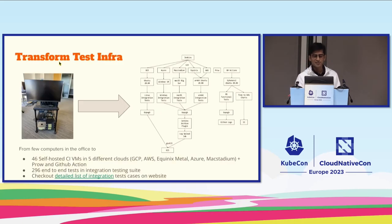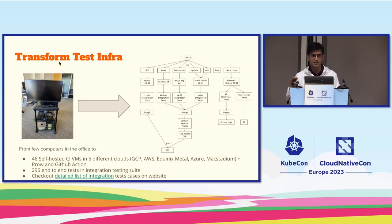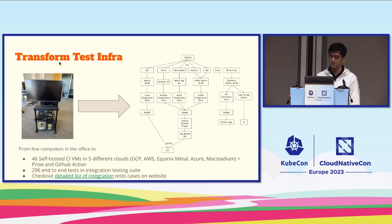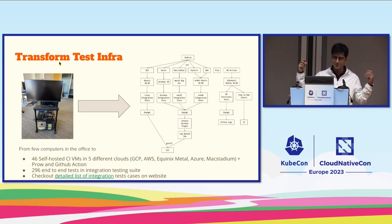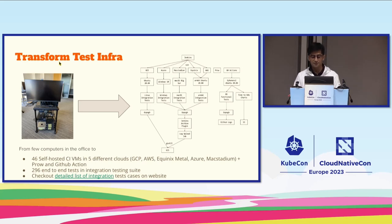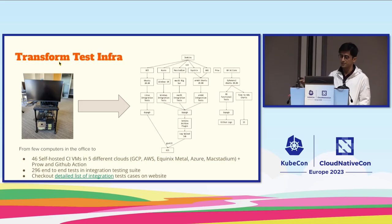This is the transformation of our test infrastructure. We massively invested in improving it for Minikube. We have more than 46 self-hosted agents in five different clouds, including clouds like Equinox and Mac Stadium, to physically test Minikube on those machines. We have a full list of integration tests on our website that is automatically generated.